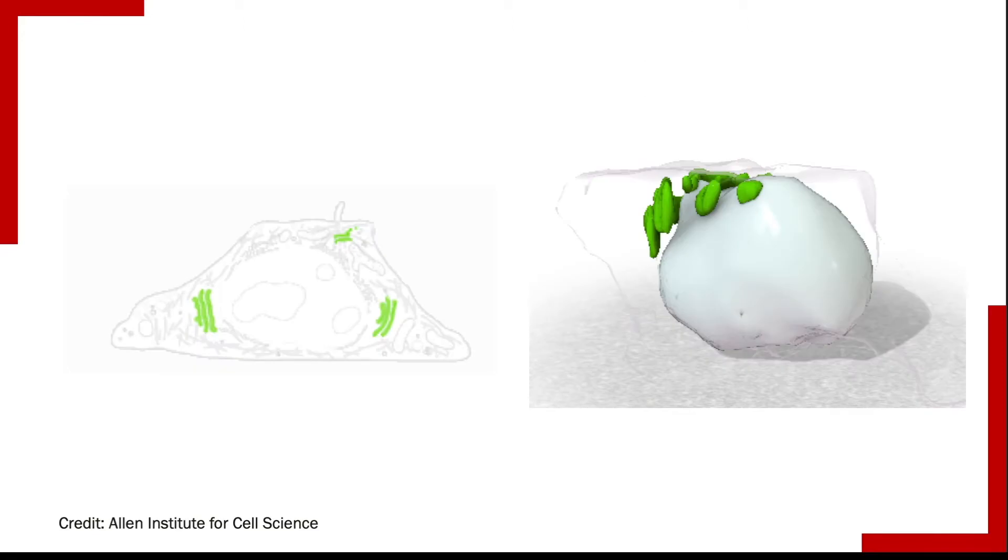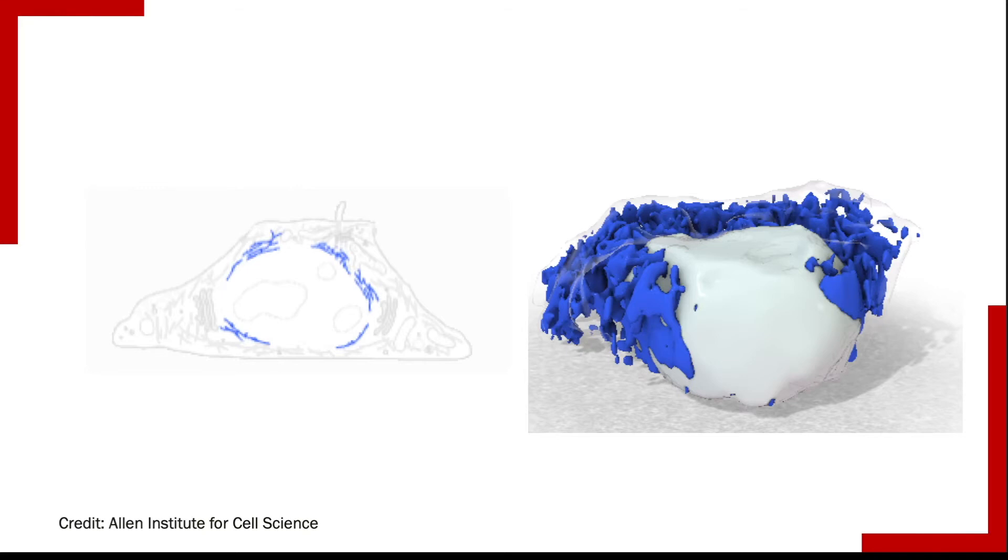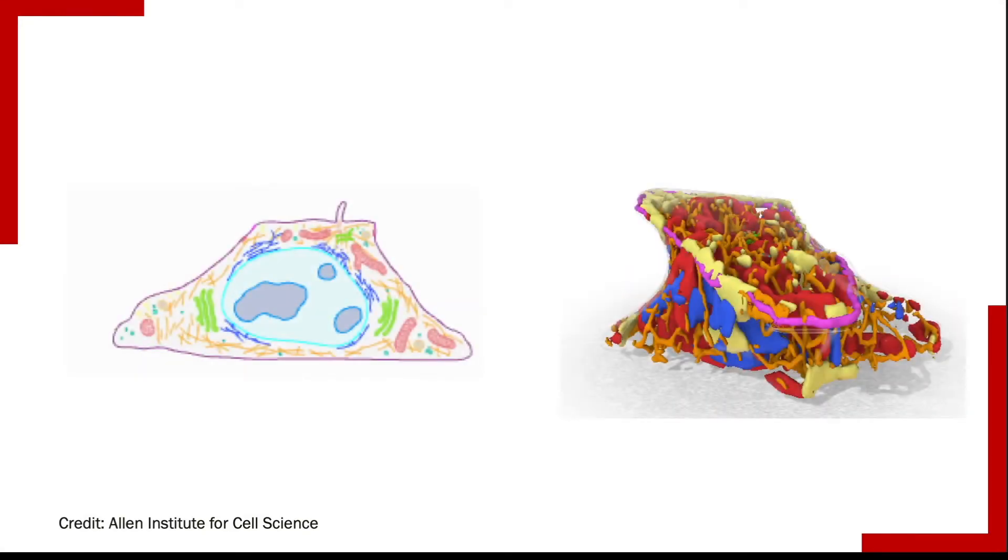So how do we use microscopes to actually study cells? We do this by adding special dyes to the cells. Each dye is a different color and goes to a different part of the cell and cells have a lot of different parts.